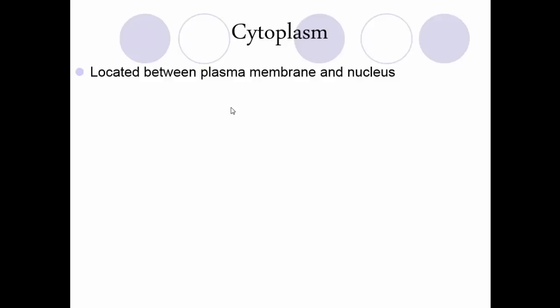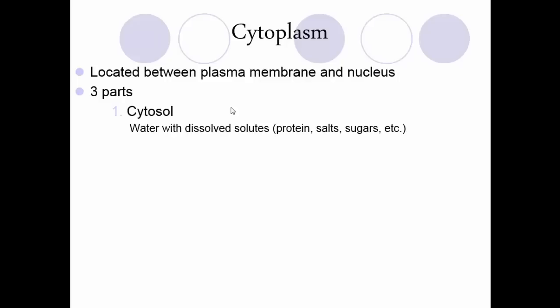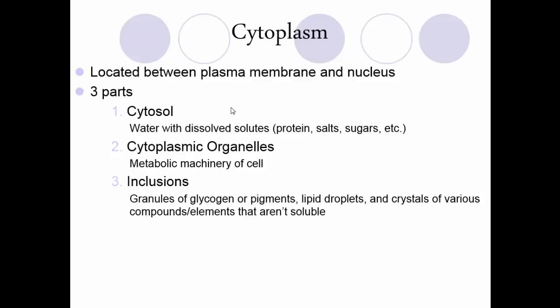The cytoplasm takes up all the empty space between the plasma membrane and the nucleus. There are actually three parts: cytosol, which is water with dissolved solutes — nutrients moving across the plasma membrane dissolve into the cytosol before going to a particular organelle; cytoplasmic organelles, the metabolic machinery held within the cytoplasm; and inclusions, which are droplets of things that can't be dissolved, like fats or glycogen, that become part of the cytoplasm.